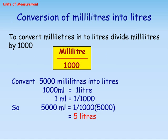Conversion of milliliters into liters: To convert milliliters into liters, divide milliliters by 1,000. Convert 5,000 milliliters into liters. 1,000 milliliters equals 1 liter, so 1 milliliter equals 1/1,000. Therefore 5,000 milliliters equals 1/1,000 into 5,000 equals 5 liters.